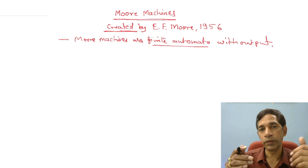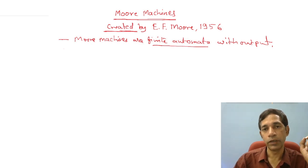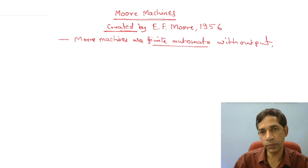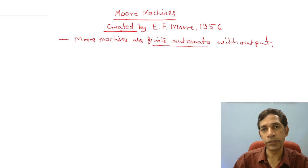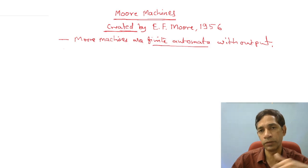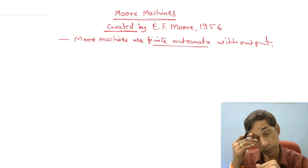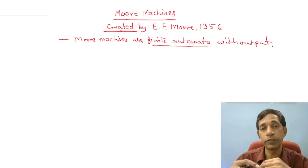In the case of a finite automaton, we have the input string. The input string can be considered as the program as well as the input. You can consider the string as the program and the individual symbols in the string as the instructions. Once your machine reads the symbols one by one, it executes the instructions one by one, transitioning from one state to the other and modifying the contents of memory.